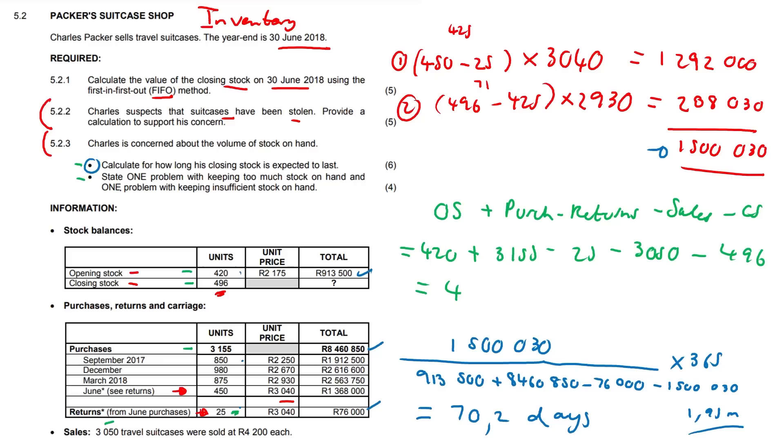State one problem with keeping too much stock on hand and one problem with keeping insufficient stock on hand. So one mark plus another one mark. With keeping too much stock on hand, the stock can become obsolete or maybe it becomes outdated, it's redundant, we're unable to sell it. And with keeping insufficient stock on hand, it might not meet the needs of customers and they may go elsewhere to buy their products. Simply put, there's a loss of income now because demand is greater than the supply, and because of that, they're going to go elsewhere.